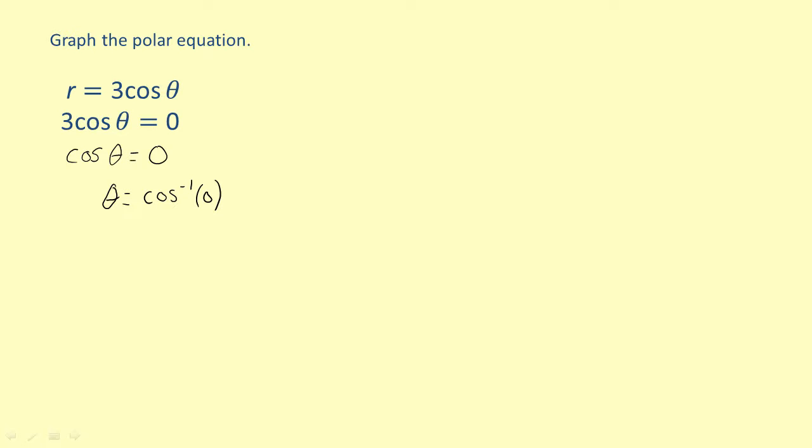The inverse cosine of zero is always some odd multiple of pi over two. So theta equals pi times n minus pi over two, where n is any odd integer.